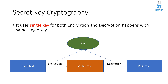Secret key cryptography uses a single key for both encryption and decryption — the same password is used for both. A plain text is changed to cipher text during encryption, and after decryption it is converted back into plain text. There is one key used for both encryption and decryption.